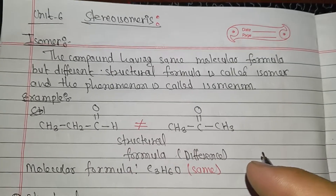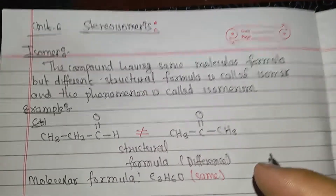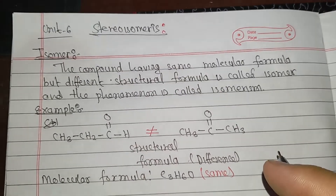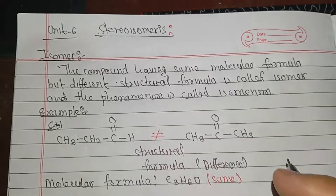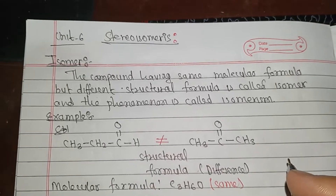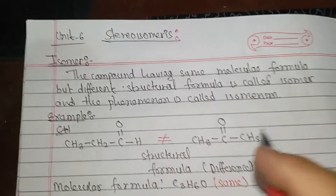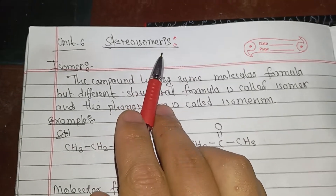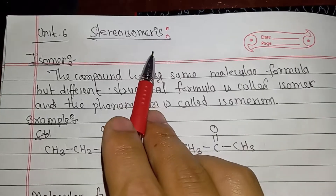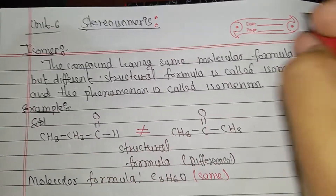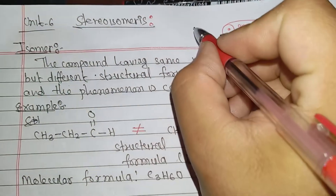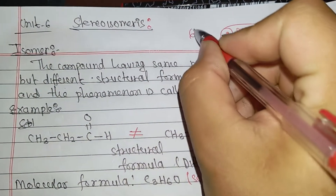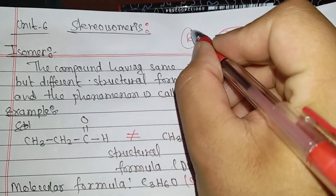Hello. Welcome to the first semester of Engineering Chemistry, Bachelor in Civil Engineering, Unit 6: Stereoisomerism. This is the topic of the video. This is generally 6 marks. This is a new course.